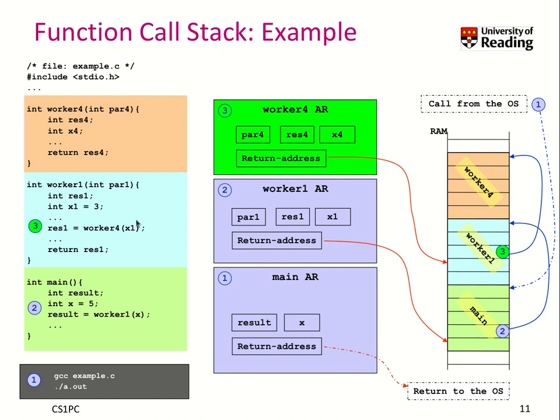Now that we have understood how the code is basically arranged into main memory, into this activation record by the compiler, and how this then would be executed, we need to understand the actual values.